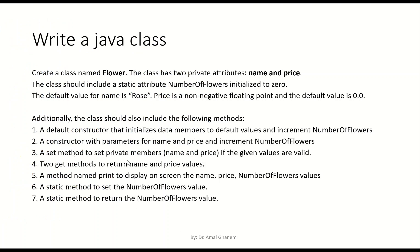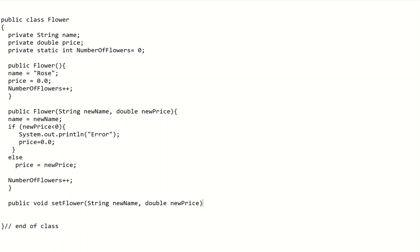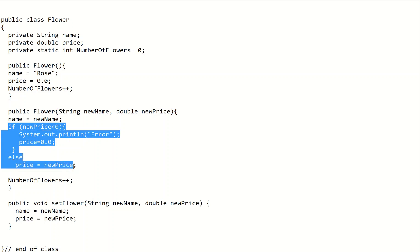Next, we should have a set method to set the private members name and price if the given values are valid. The set method is always public, declared as void, and we'll call it setFlower. It takes String newName and double newPrice. Inside, we set name = newName. For price, since newPrice might be invalid, we copy the if statement from the constructor and check if newPrice is negative.